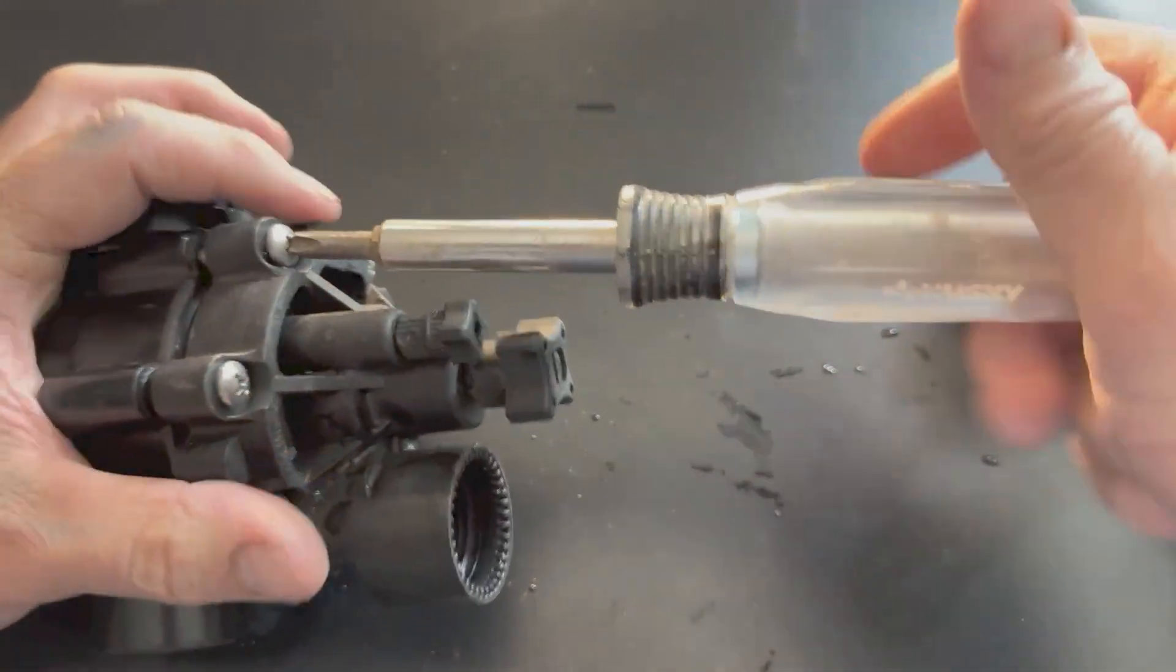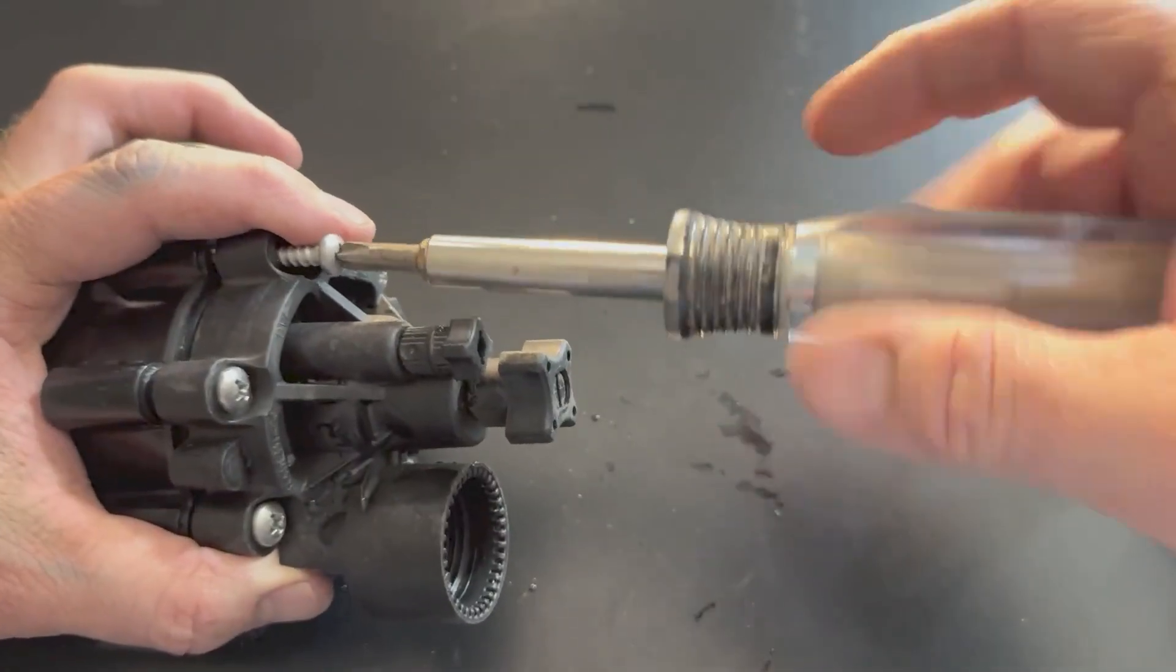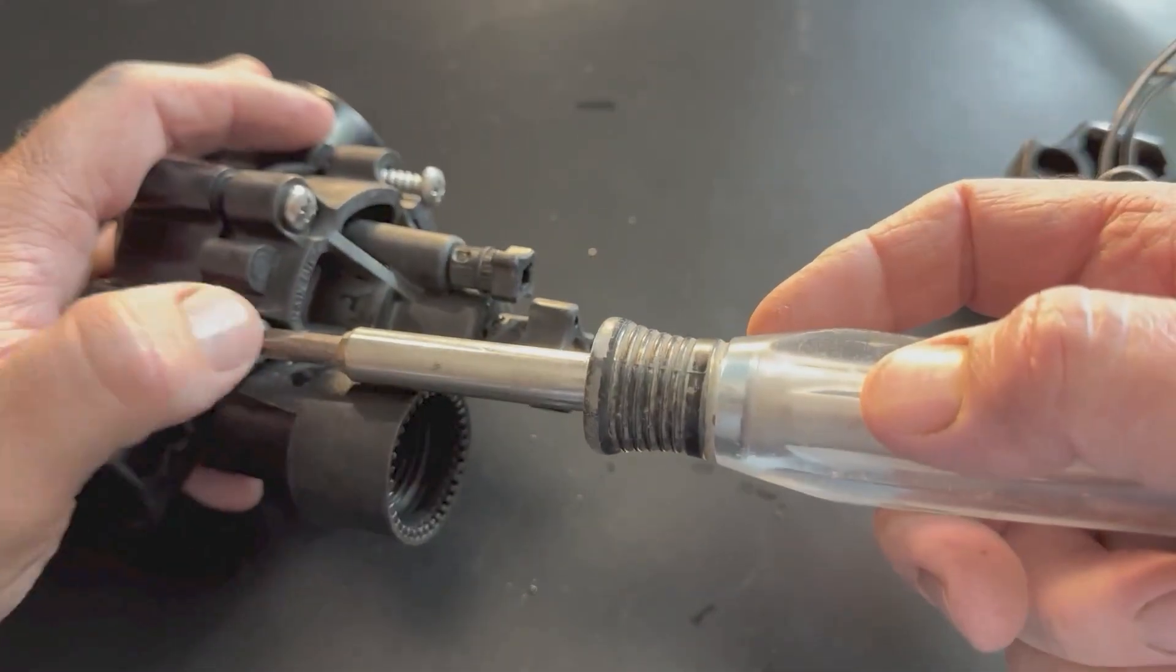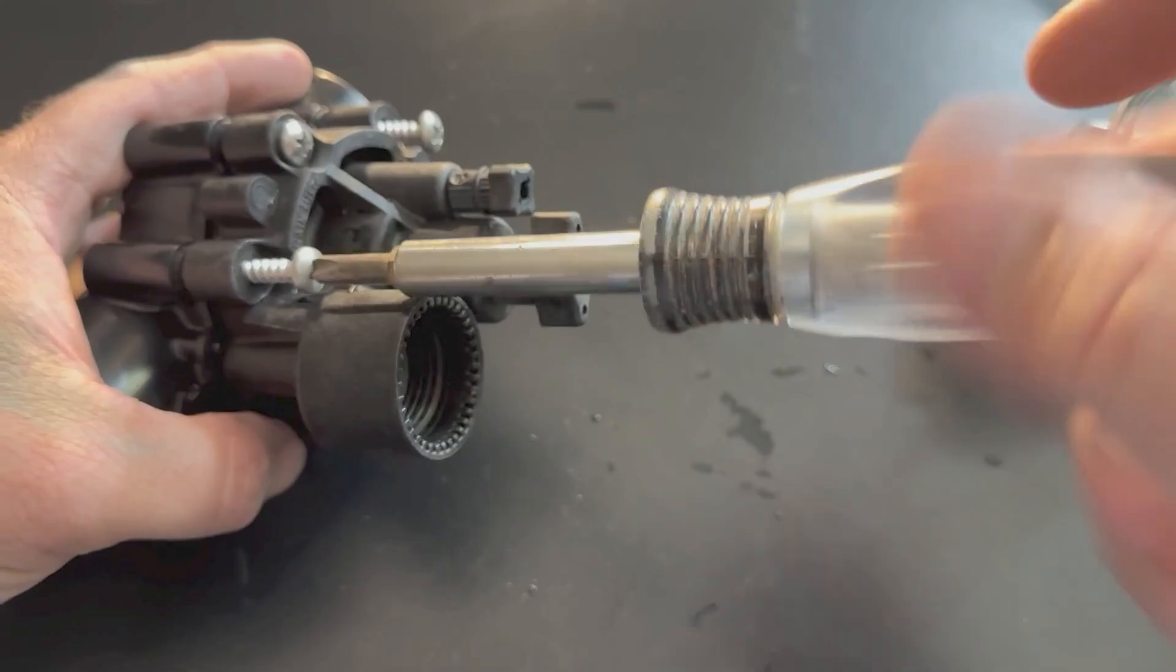Then I'll take my Phillips screwdriver and start taking the screws out. It just helps you with that solenoid gone, helps you get to this front screw there.